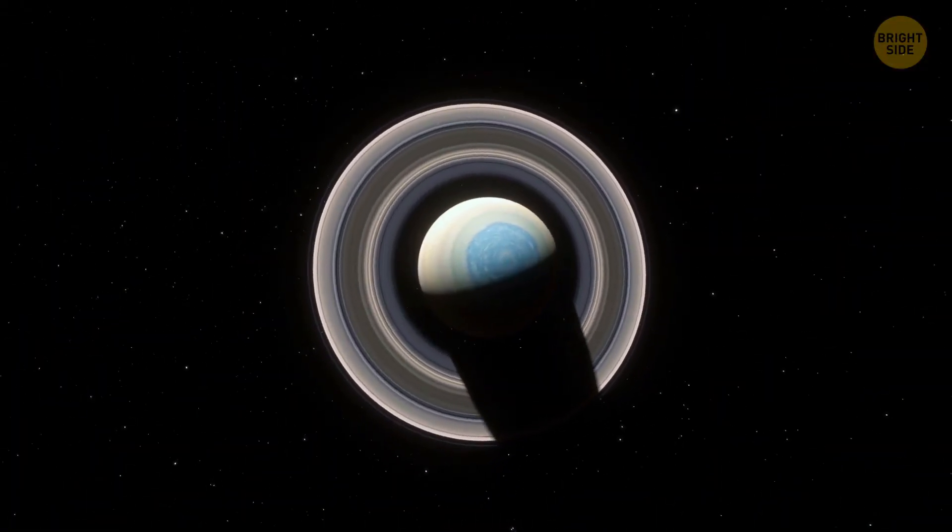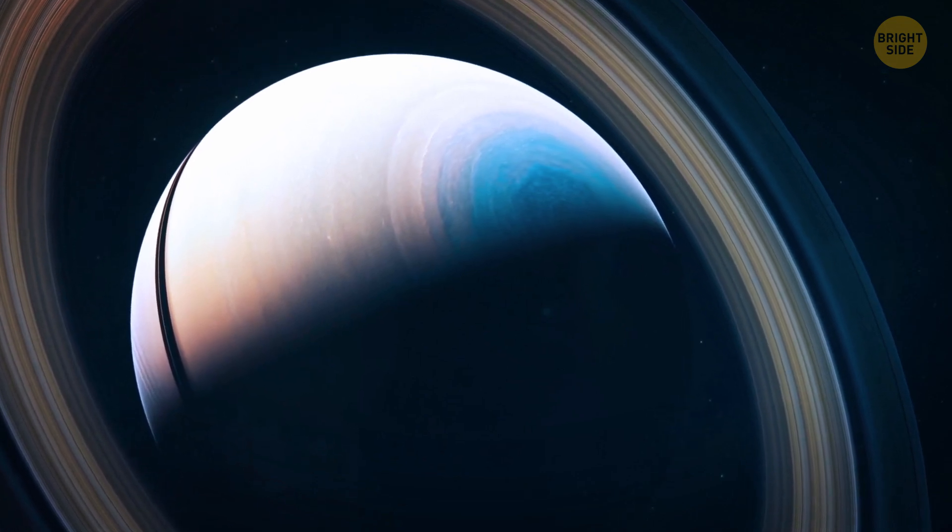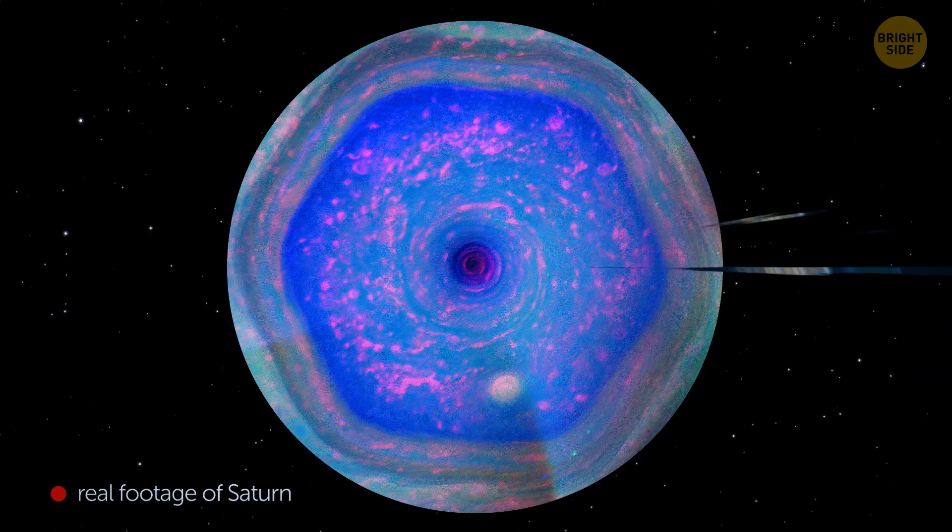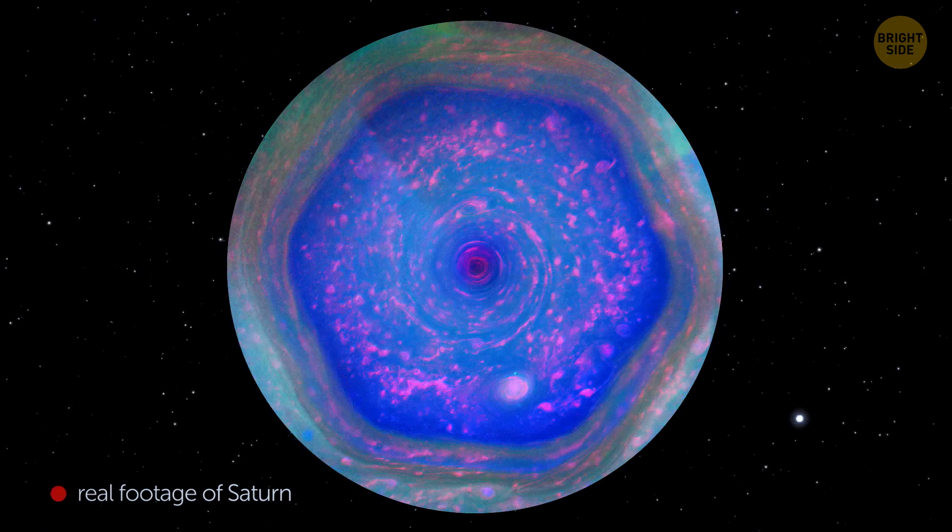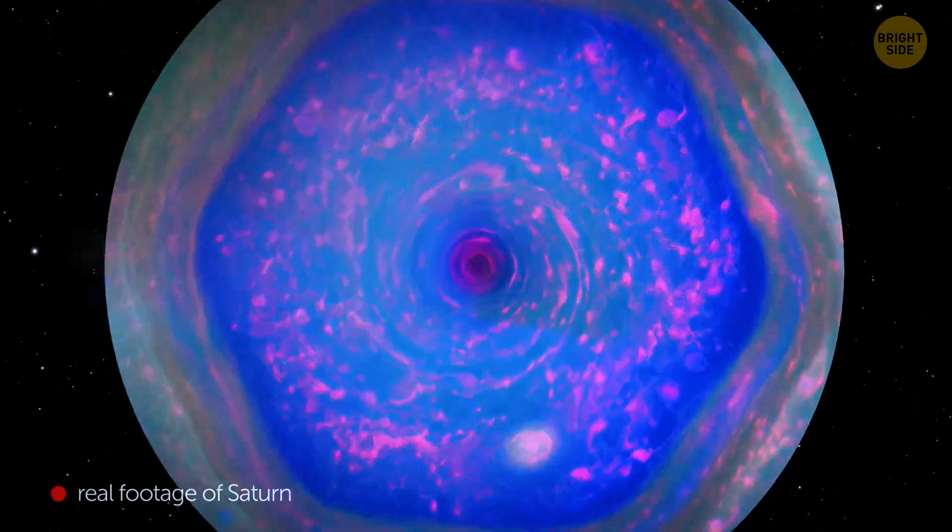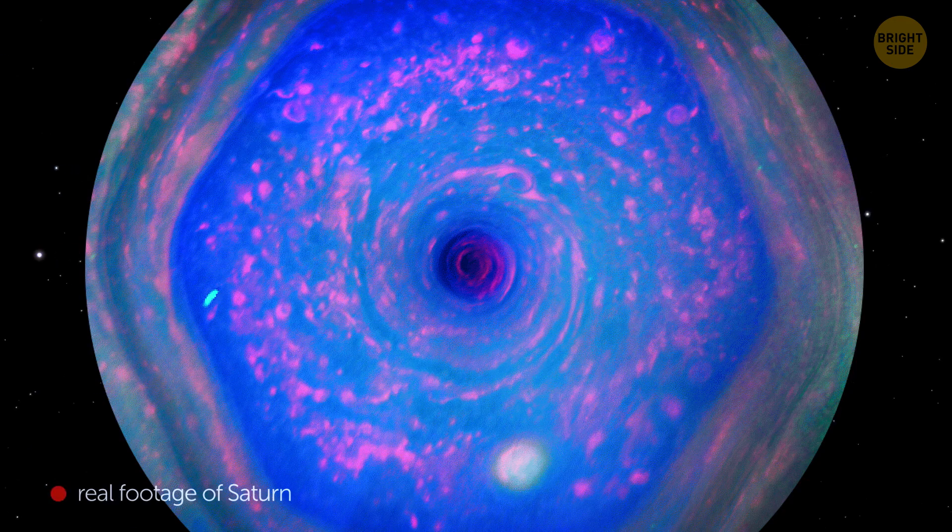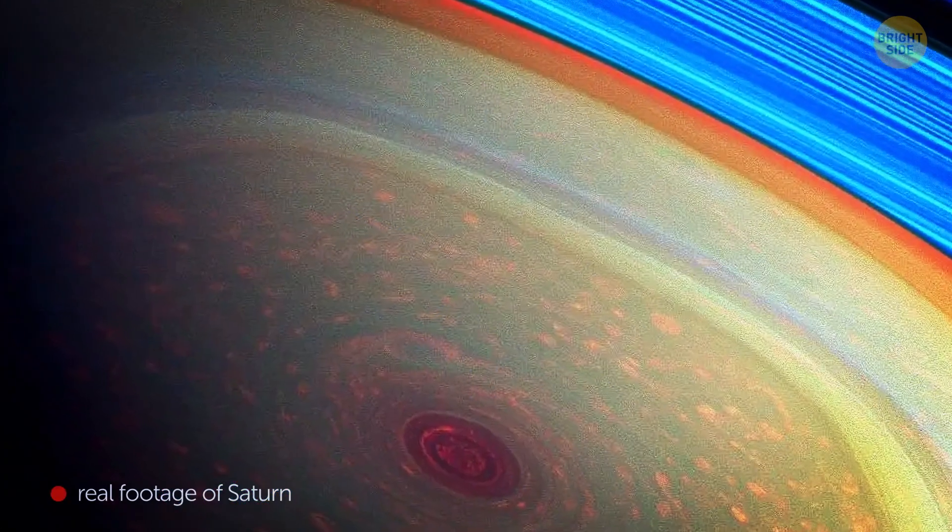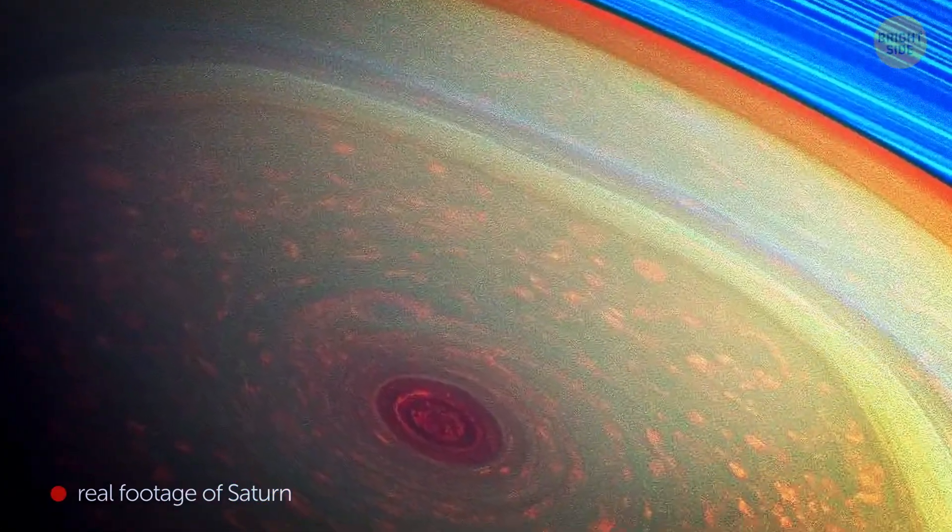At the North Pole of Saturn, a mysterious storm is raging. It's ginormous, spanning an area larger than our planet and showcasing a beautiful but baffling hexagonal pattern. No one has understood yet why the storm has such a bizarre shape.